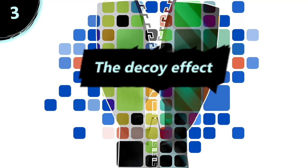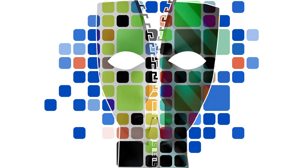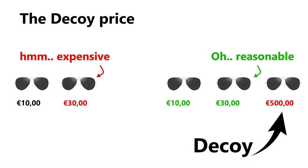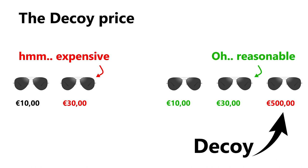The decoy effect: When presented with an irrational third option, for example, consumers tend to change their purchasing preferences.